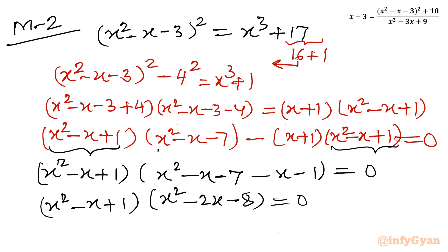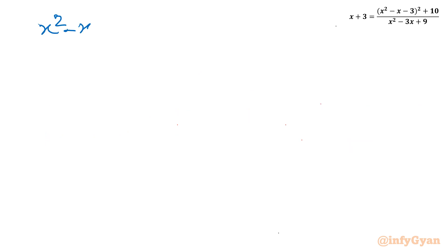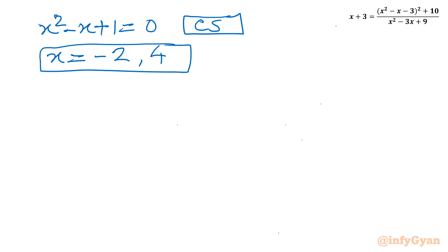Factorizing x² - 2x - 8 = (x + 2)(x - 4). So the full factorization is (x² - x + 1)(x + 2)(x - 4) = 0. Setting x² - x + 1 = 0 gives complex solutions, as in method 1. From the linear factors: x = -2 and x = 4 — two real accepted solutions.